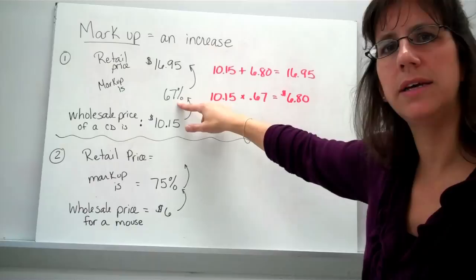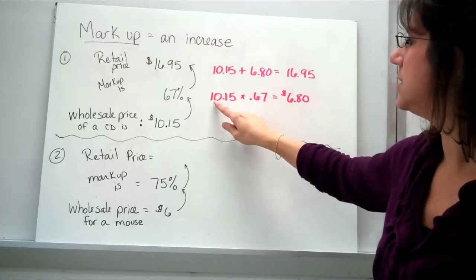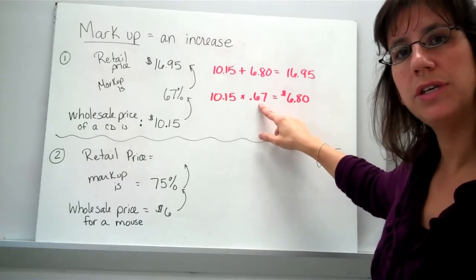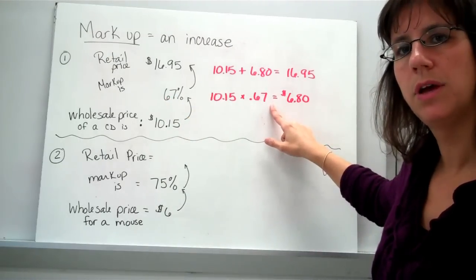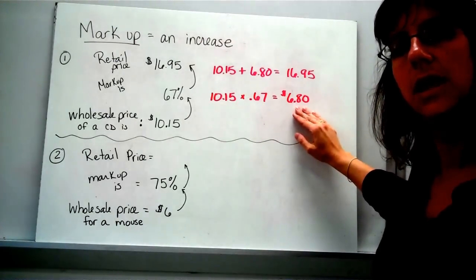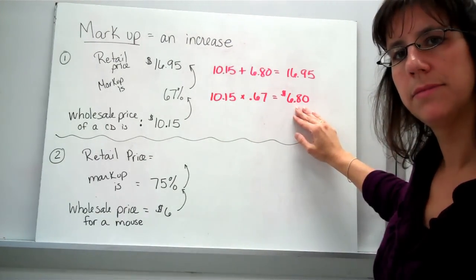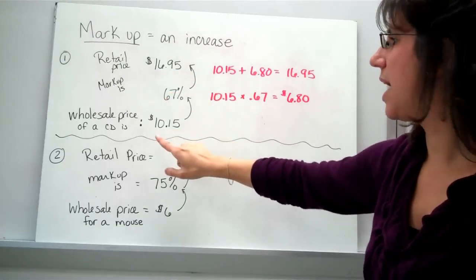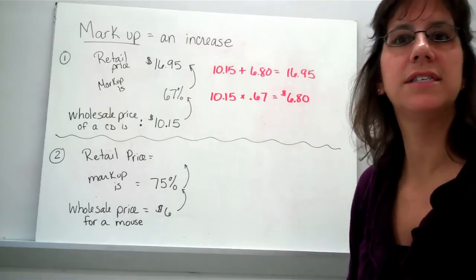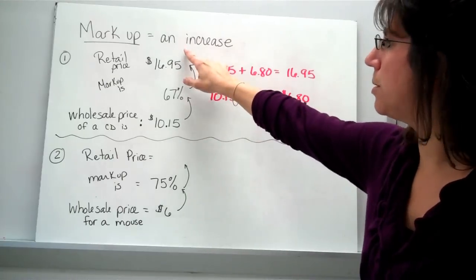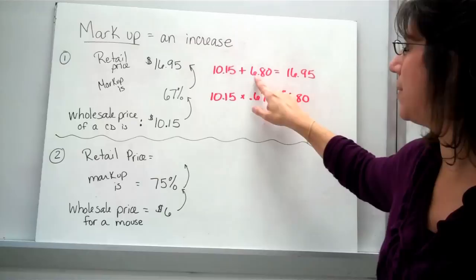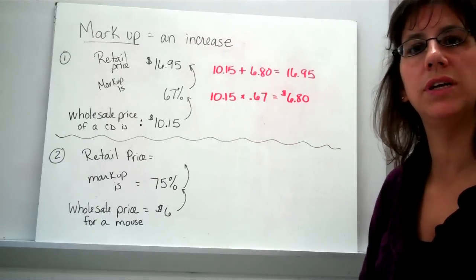Well, how much is that really? In order to figure that out, you're going to do $10.15 in your calculator times .67. Did you notice that I took the percent and changed it to a decimal? Go ahead and multiply that out. Now that's how much profit the company is going to make on that CD. They're going to make $6.80. So the retail price is going to be how much they paid for it plus how much they want to make. And that's how much they're going to sell it to you for. When you do a markup, you're always going to add those two numbers. How much did they buy it for? How much profit are they going to make? And that's going to be your retail price.